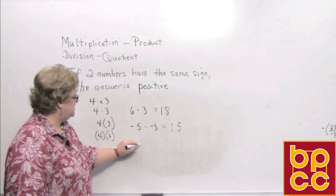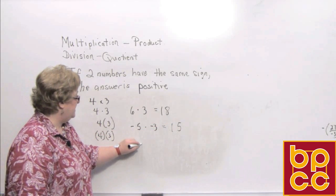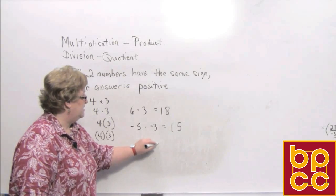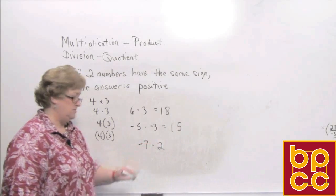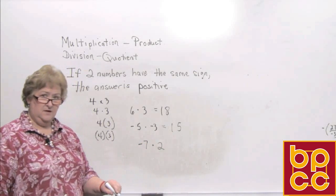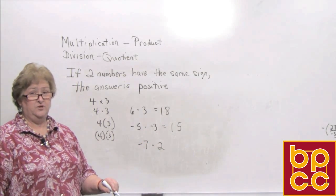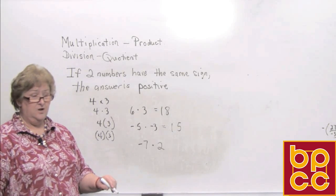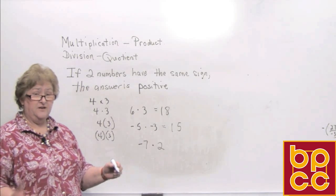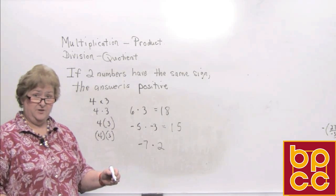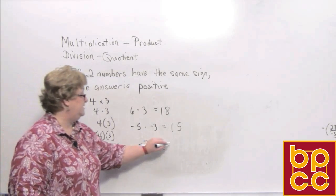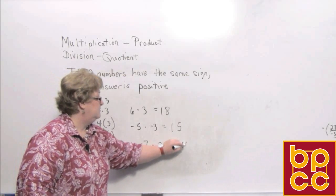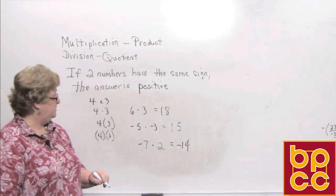Let's try this one. Let's say we have a negative 7 times 2. Now our signs are different between the two numbers, so the answer is not going to be positive. One negative doesn't have a partner to match up to, so this answer is going to be a negative 14.